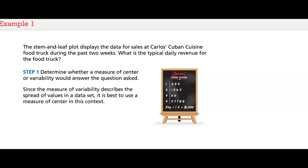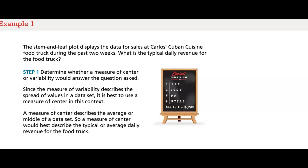Since the measure of variability describes the spread of values in a dataset, it is best to use a measure of center in this context. A measure of center describes the average or middle of a dataset.